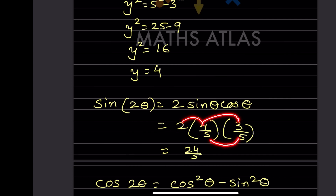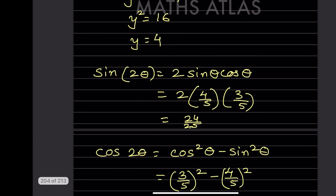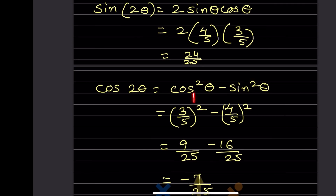For cos2θ = cos²θ - sin²θ: cos²θ = (3/5)² = 9/25 and sin²θ = (4/5)² = 16/25. So cos2θ = 9/25 - 16/25 = -7/25.